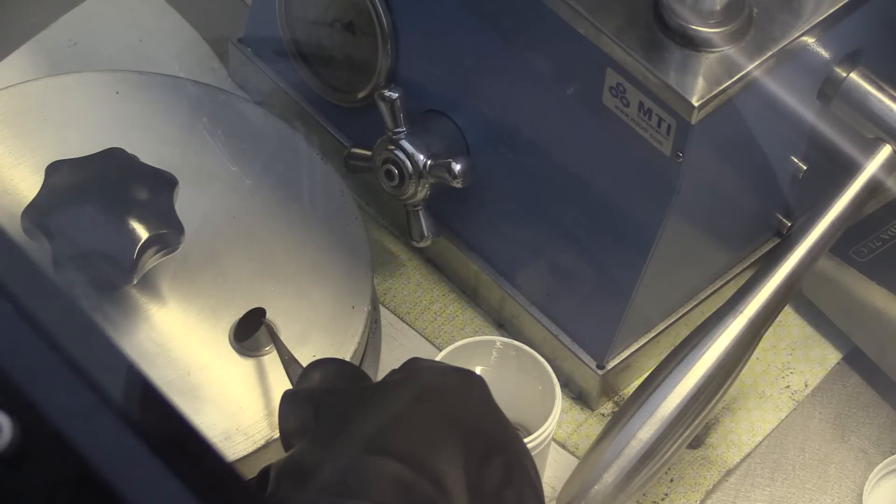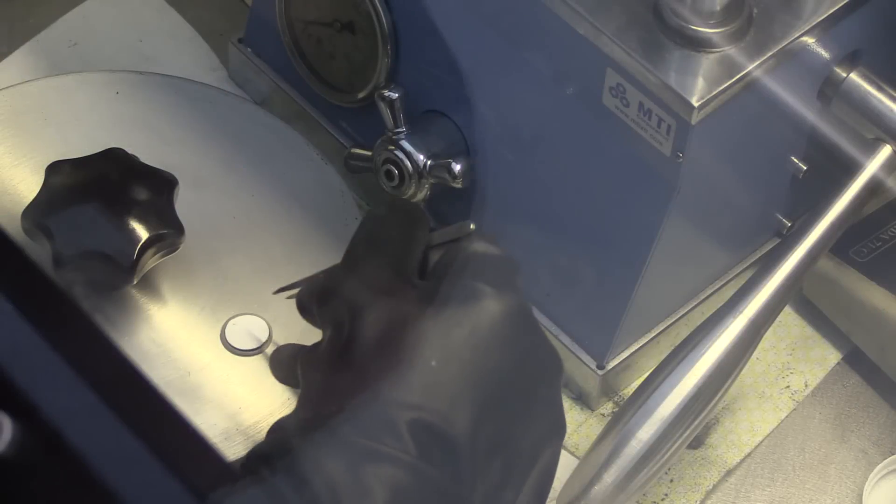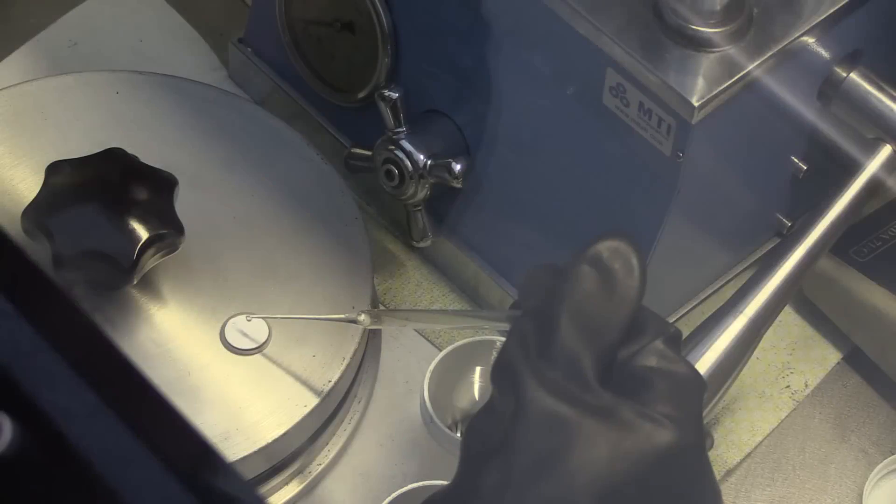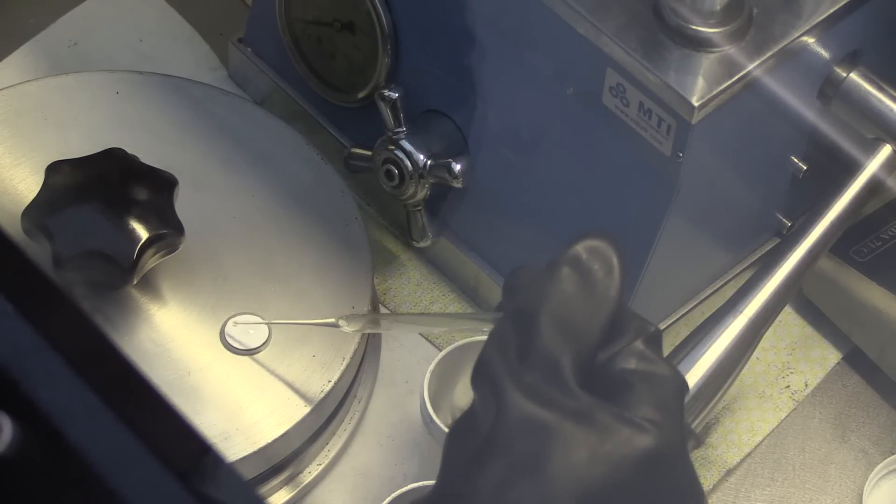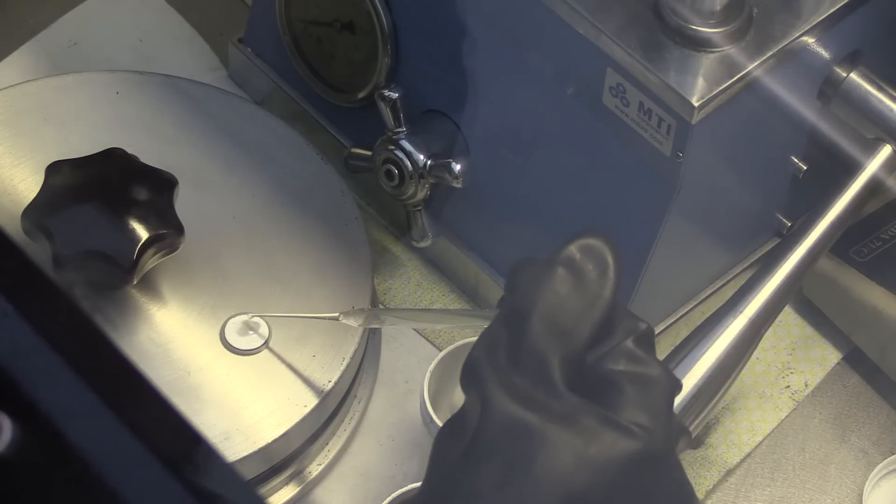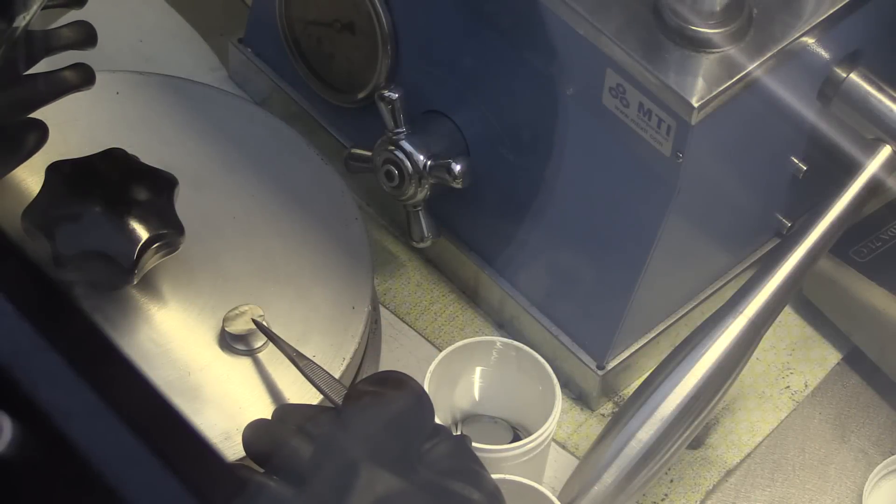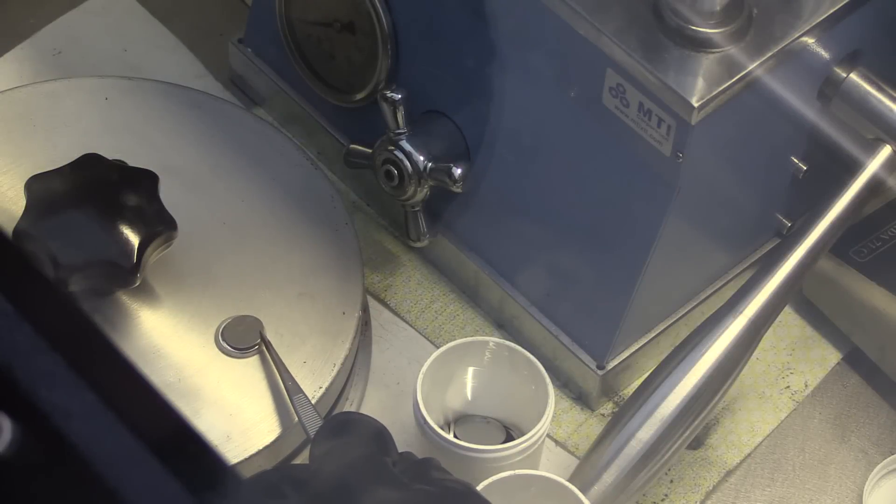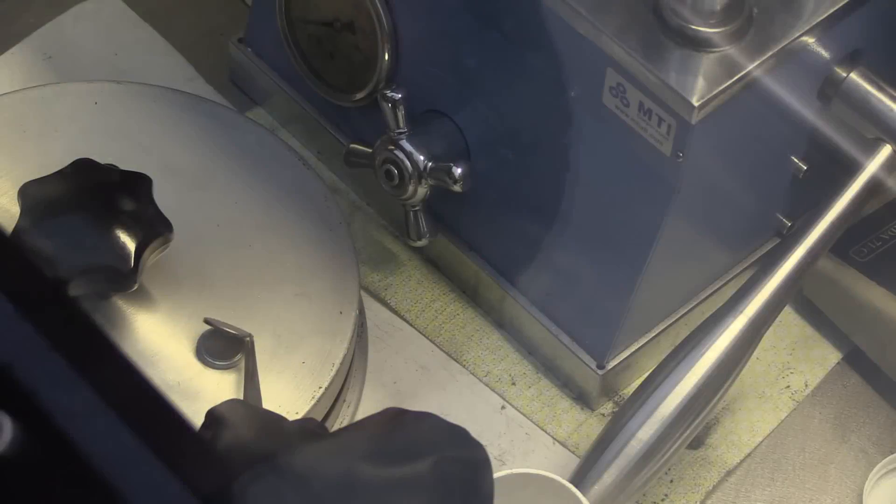One of the electrodes is then placed with the current collecting side onto the steel spacer before adding a fibre glass separator, which is then soaked with electrolyte. This electrolyte soaked separator is an important part of the construction, aiding iron transport whilst also ensuring there is no direct contact between the electrodes. The active material side of the second electrode is then placed facing the separator before adding another steel spacer and finally the other half of the coin cell casing.